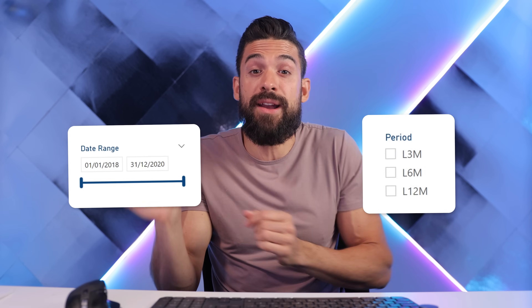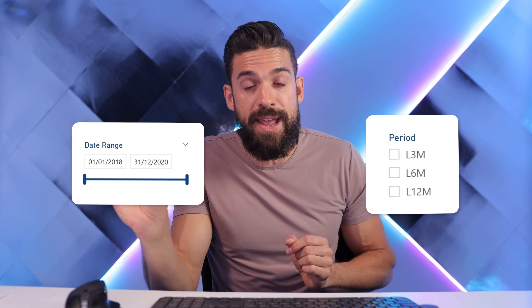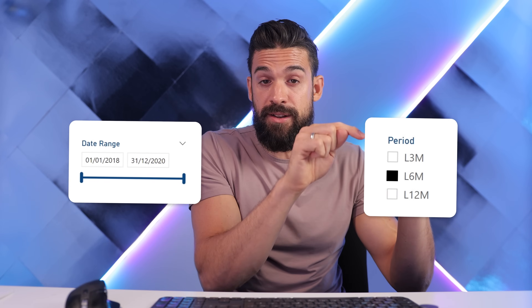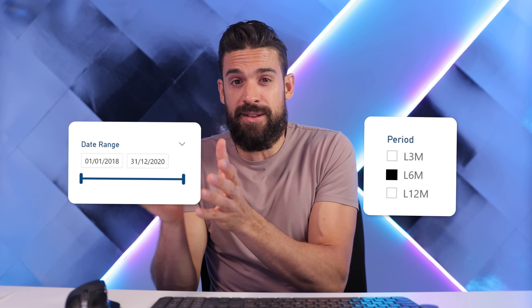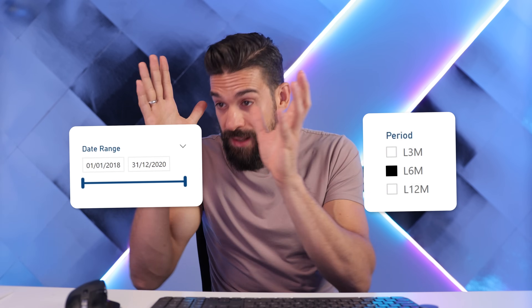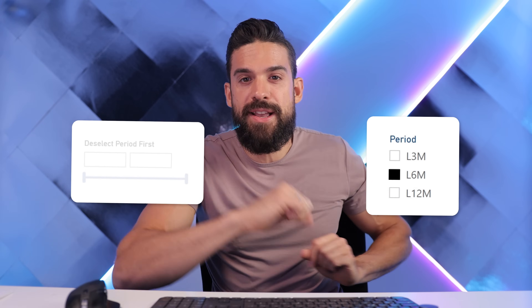you have a timeline where the user can pick a custom date range. Well, if you have a selection in the first slicer, having the ability to select a custom date range doesn't really make sense anymore, and that slicer should get disabled. In this video, I'm going to show you how to set it up.